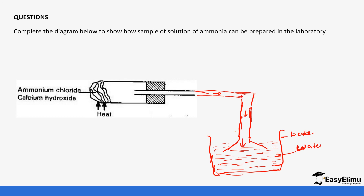That is how ammonia solution is prepared using a filter funnel. That brings us to the end — see you in the next lesson as we look at other properties of ammonia.